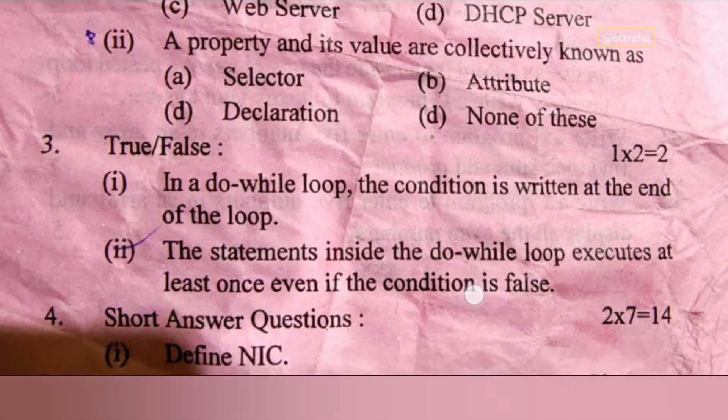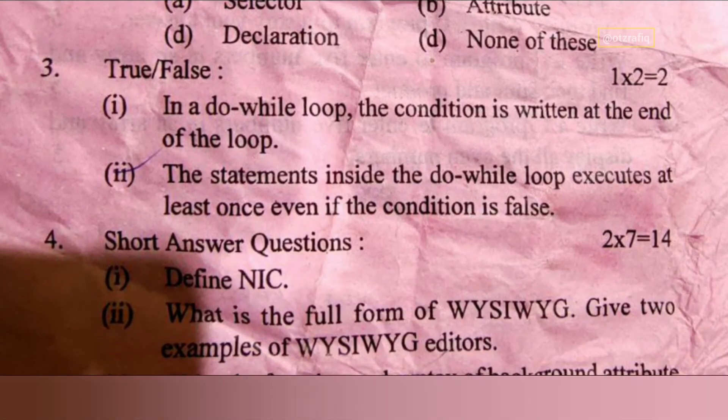Number three, true and false: In a do-while loop, the condition is written at the end of the loop - it is true. Number two: the statement inside the do-while loop executes at least once even if the condition is false - it is also true.